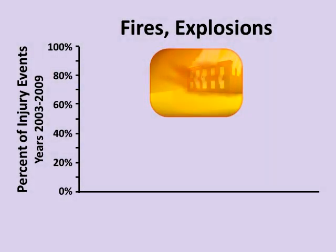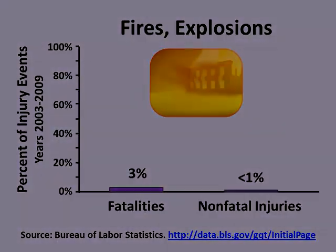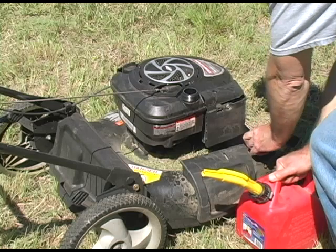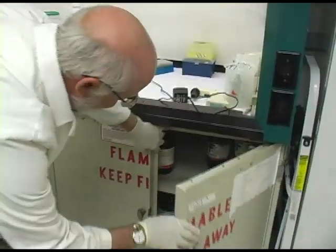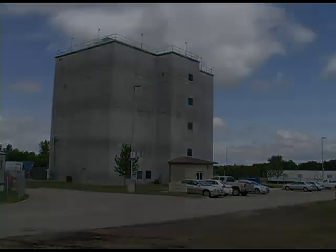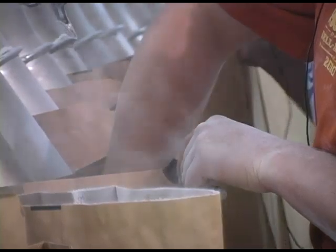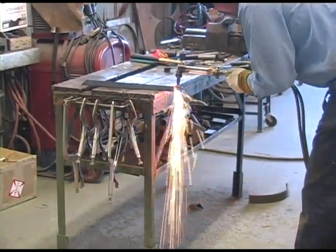Our next category of hazards includes fires and explosions. Overall, fires and explosions cause about 3% of workplace deaths and less than 1% of non-fatal injuries. However, certain workplaces are at much higher risk. Fires and explosions are more common where workers handle flammable liquids such as fuels and solvents. They also tend to occur where workers handle materials that generate combustible dusts, such as grain, flour, feed, and sugar. There is also an elevated risk of fire where hot work takes place, including torch cutting and welding.